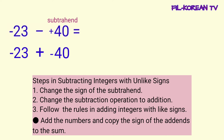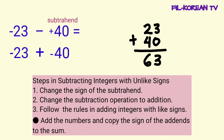Ayan. Yung sign ng addends o ng numbers na ipa-plus natin ay pareho negative. At dahil pareho ang kanilang signs, ang gagawin lamang natin, i-plus natin yung numbers pagkatapos kukupyahin natin yung sign nila sa answer. I-plus natin yung numbers: 23 plus 40 equals 63.